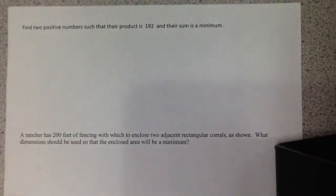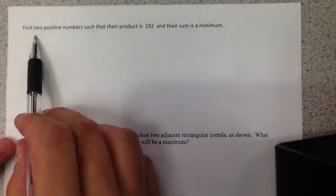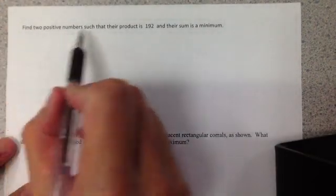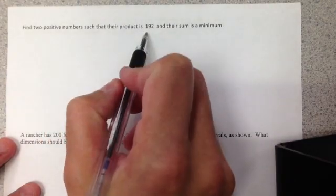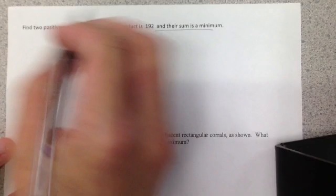Let's take a look at our review of optimization. This is an Algebra 2 topic, so you haven't seen this in a couple of years. The first one says find two positive numbers such that their product is 192 and their sum is a minimum. This is what we're trying to solve for.